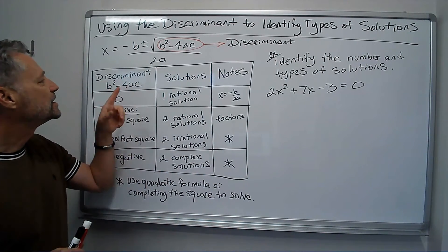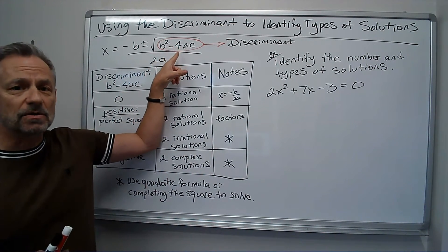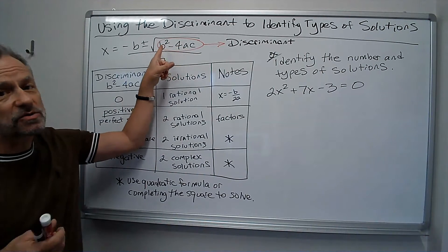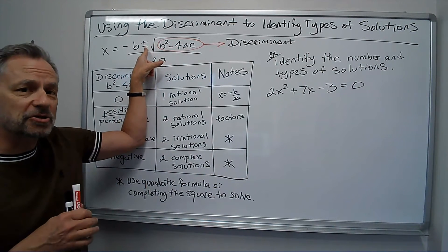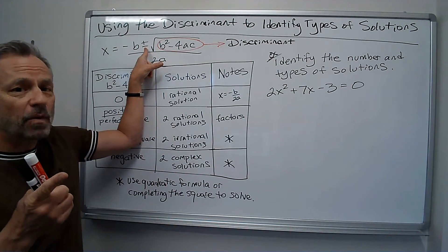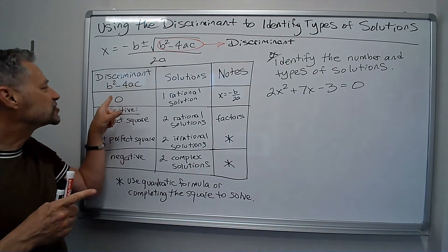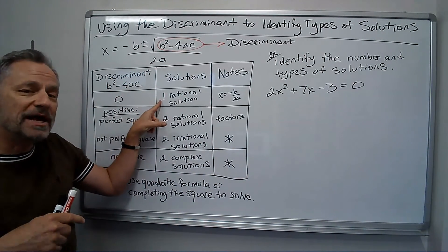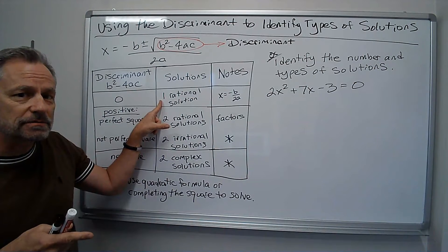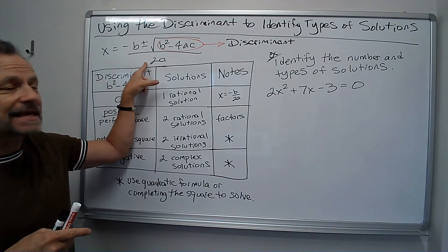For instance, suppose that's a zero. If that's zero, I lose my square root, it goes to zero, I lose the whole plus or minus. I'm only going to get one answer. The answer is just going to be -b/2a. So if the discriminant is zero, I get one rational solution. The solution is -b/2a, whatever I get here.